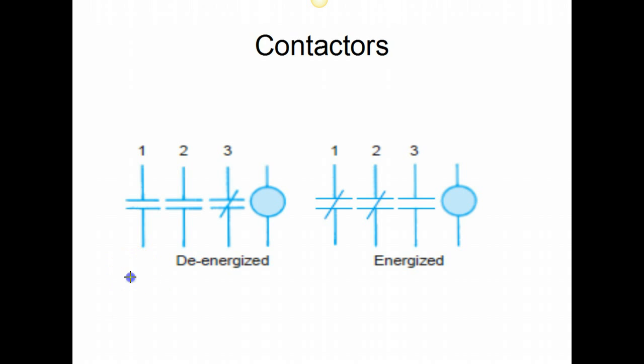In a schematic diagram, a contactor or relay is always depicted in the de-energized state, meaning there's no voltage applied to the coil itself. And these are the positions that the contact should be in if it's not damaged and it's working properly. So just remember, when you look at a schematic diagram, the contactors are shown in the de-energized position.